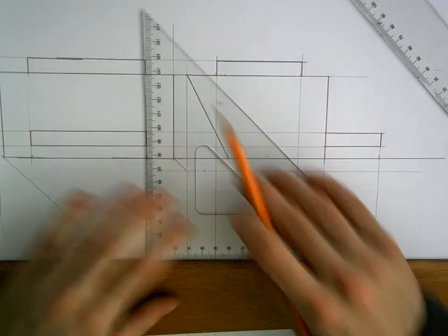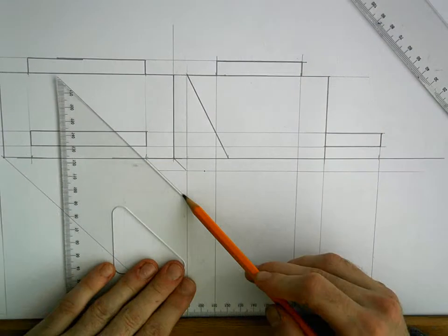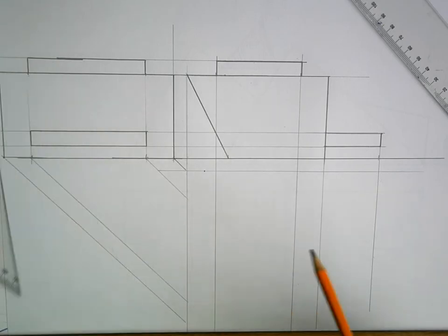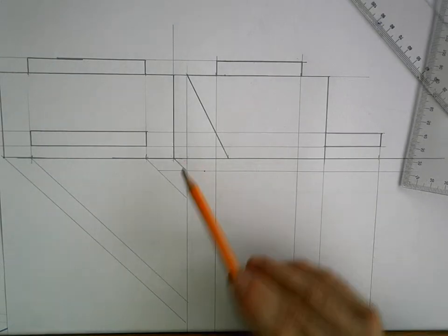What it saves you is it saves you time measuring. You can just bring them down at 45 degrees. And, again, that will only work if you have the same distance between your views.